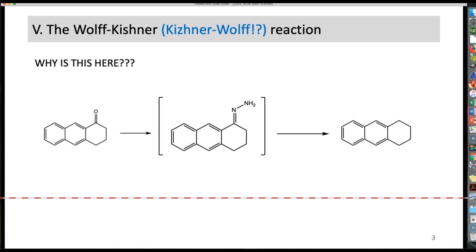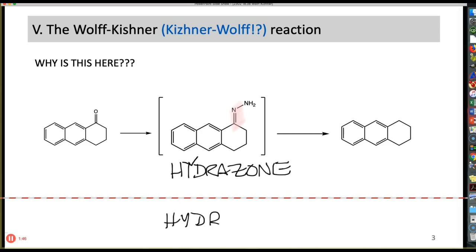This is not actually an imine, even though as you can see it is a nitrogen-carbon double bond. This is called a hydrazone, and that's because it's made from hydrazine, aka rocket fuel. So when you add hydrazine to a carbonyl, you get a hydrazone, and it's that hydrazone that allows us to do the Wolff-Kishner reduction.